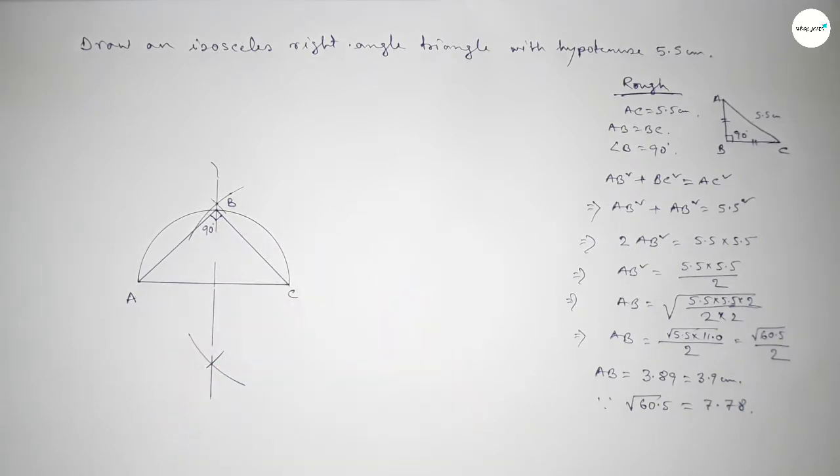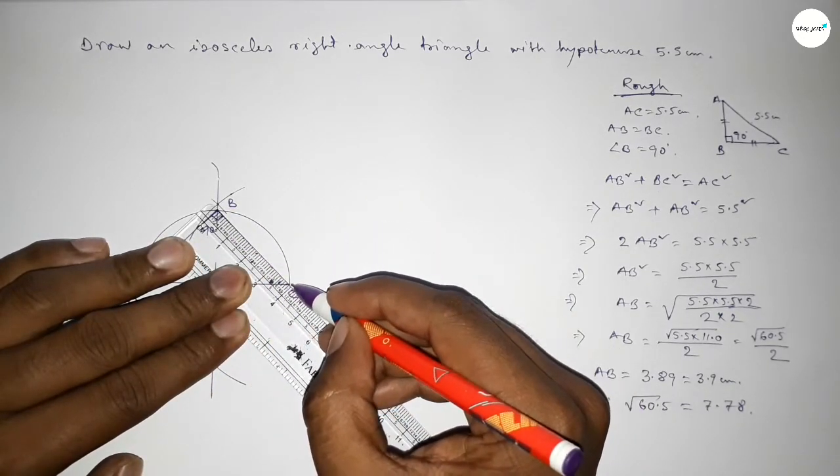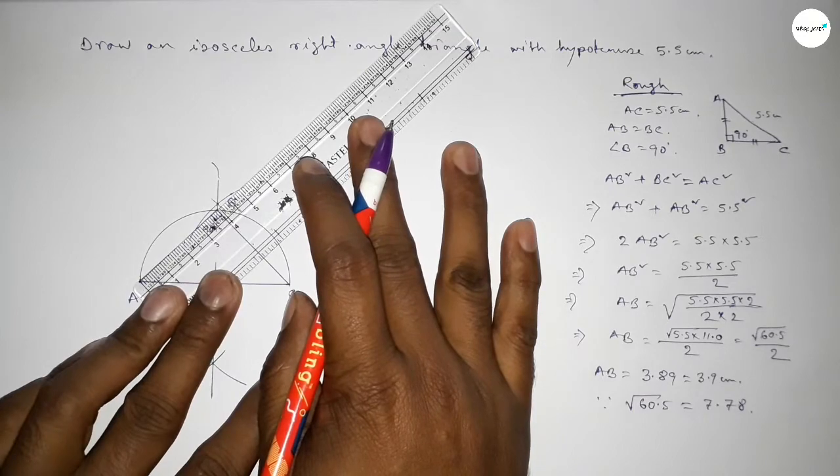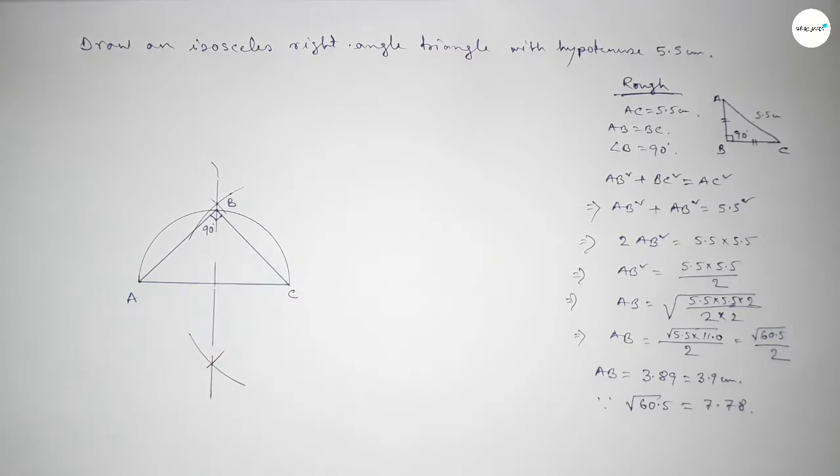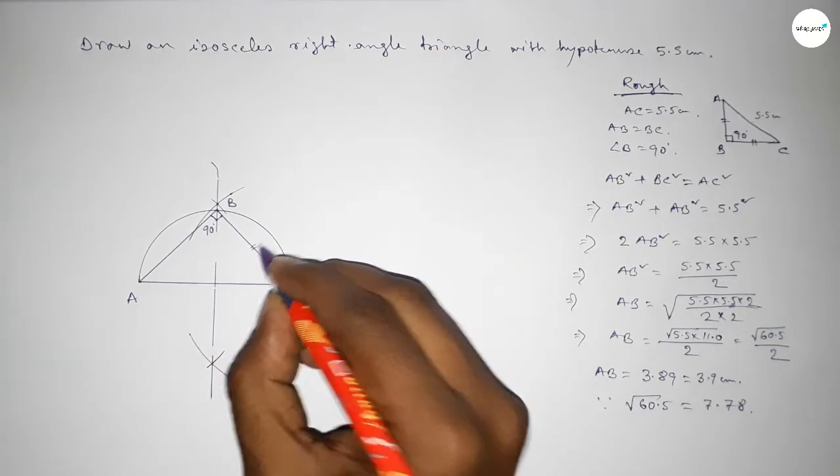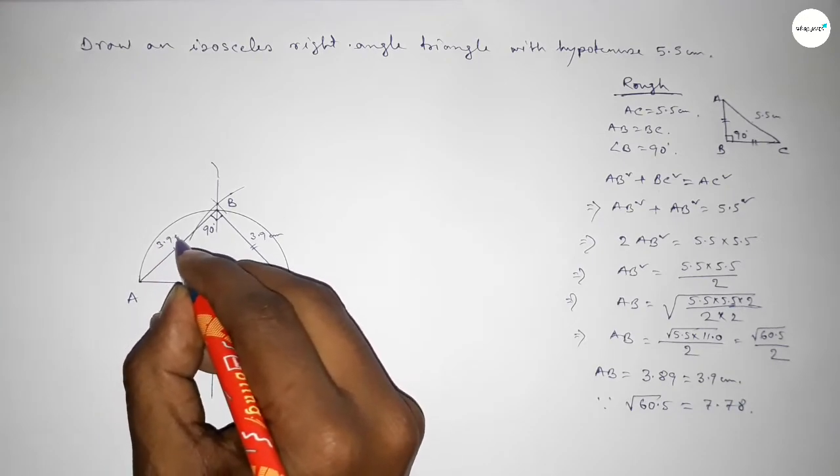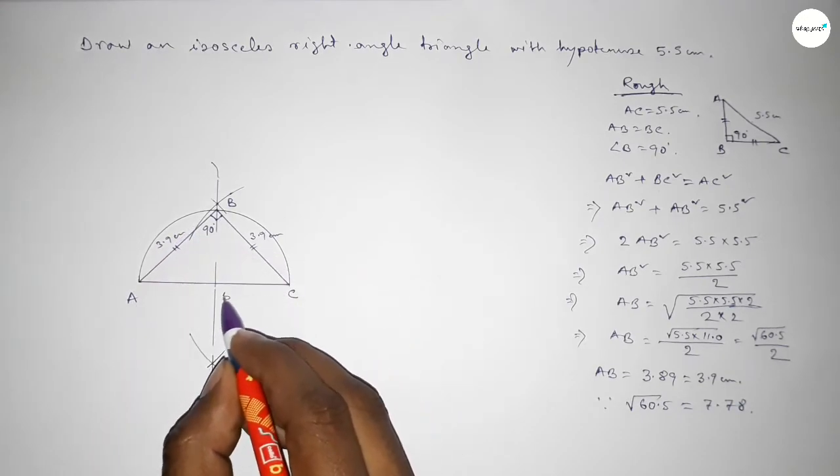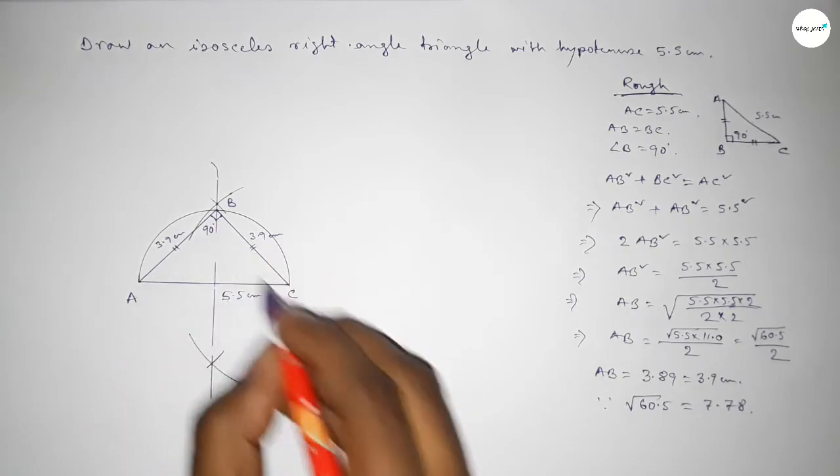Now checking the sides BC and AB: this is approximately 3.9 centimeter, and this is also approximately 3.9 centimeter. So sides BC and AB are equal. This is 3.9 centimeter, and this is also 3.9 centimeter, and this is 5.5 centimeter.